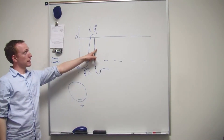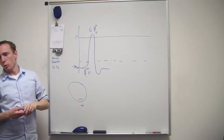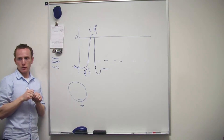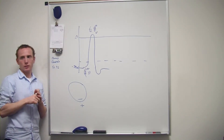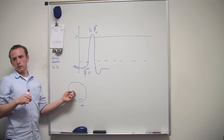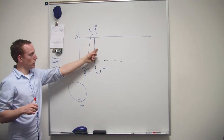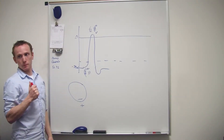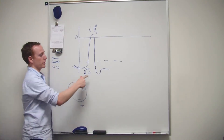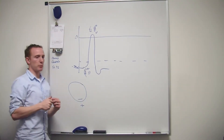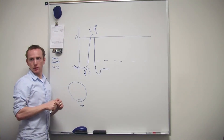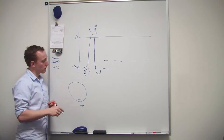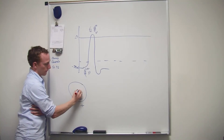So what's happening to the charge during repolarization? If it's repolarizing, what's happening to the charge inside the cell? It's becoming more negative. Why? Because potassium is leaving the cell. Potassium is positive, so if it's leaving the cell, that's making the cell more negative.